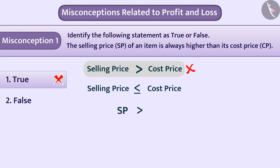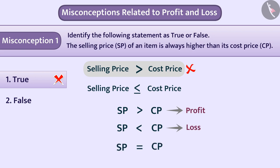If SP is greater than CP, then there is profit in the transaction. If SP is less than CP, then there is loss in the transaction. If SP is equal to CP, then there is neither profit nor loss in the transaction. Hence, option 2 is the correct answer.